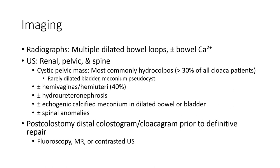For the sonographic and renal assessments: bilateral cystic pelvis, most commonly hydrocolpos plus or minus hemi-vagina, hemi-uterus, plus or minus hydroureteronephrosis, plus or minus echogenic calcified meconium in the native bowel or bladder, plus or minus spinal anomalies. Post colostomy imaging includes colostomy, colostogram, and cloakagram, prior to definitive surgery with contrast.